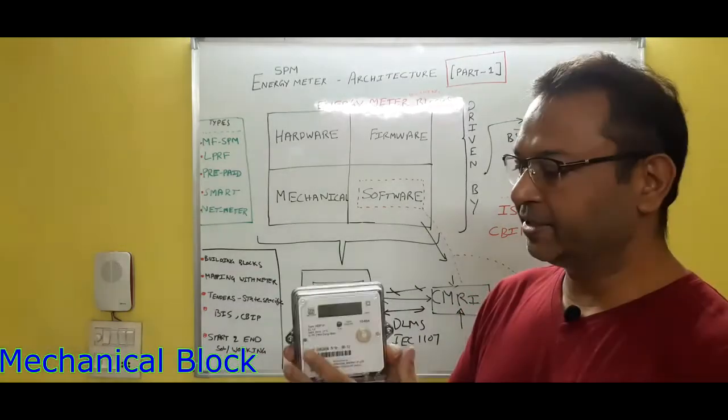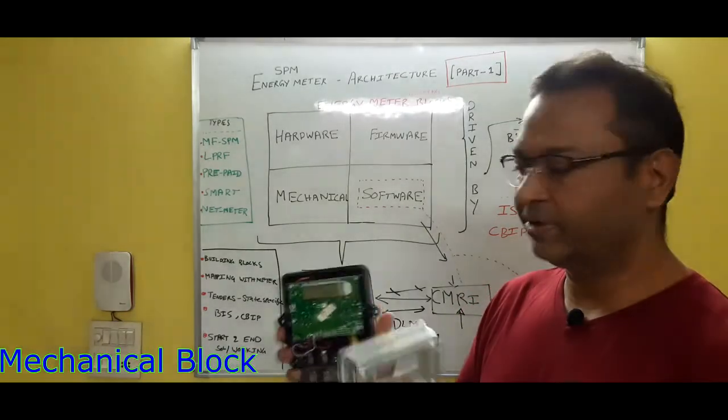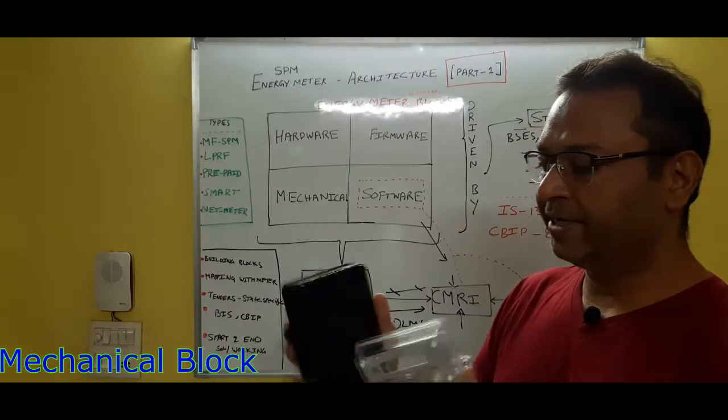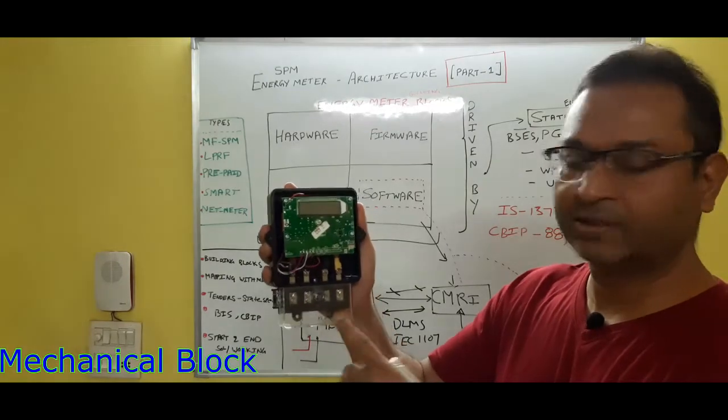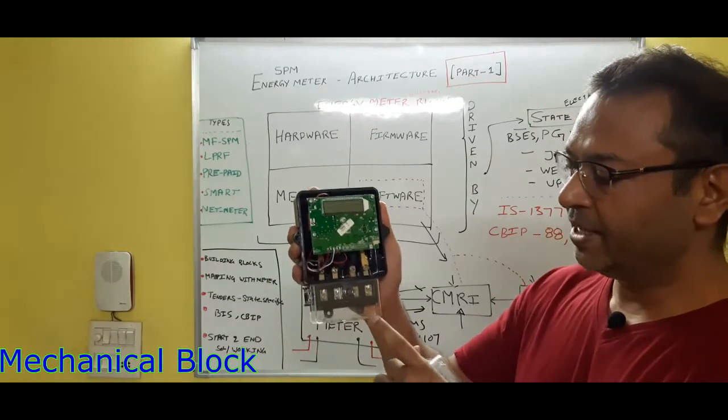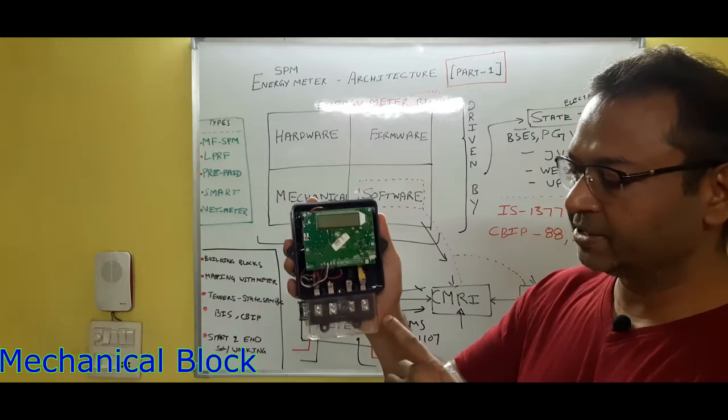On the mechanical part, it consists of the top cover and this is called its base cover. This is called its terminal cover, and under this terminal cover there is one block through which you connect the phase wire and neutral wire and output wires.